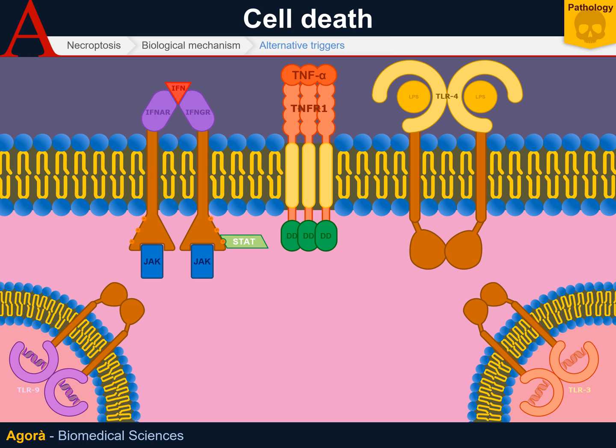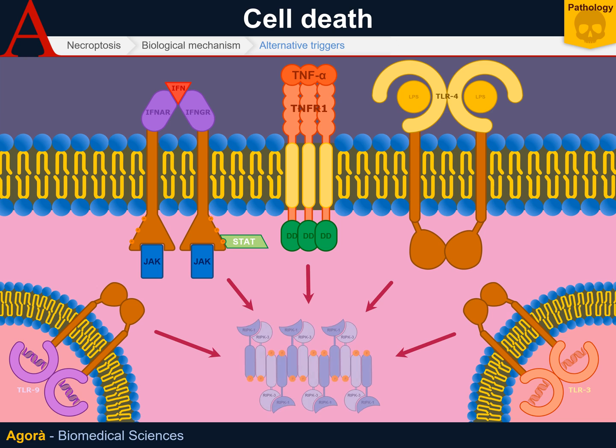Toll-like receptor 9, on the other hand, is able to detect double-stranded DNA that is usually released by pathogens when they are destroyed. All these signals, although through pathways that are not always well understood, lead to necrosome activation and pore formation, thanks to the mechanism described earlier.